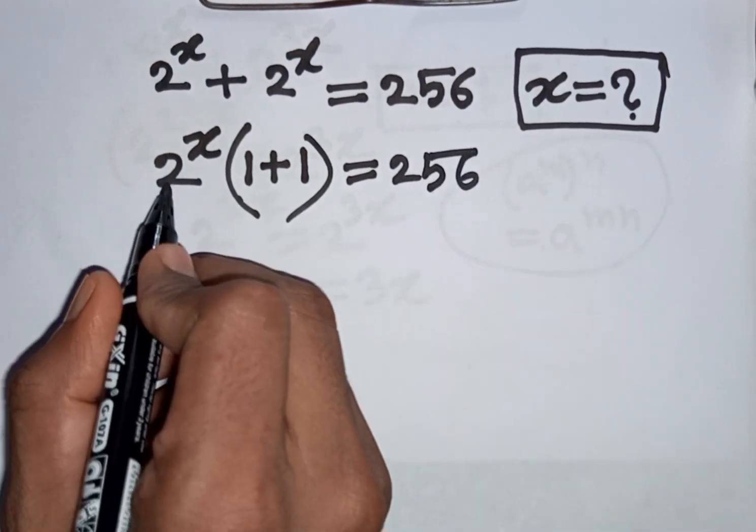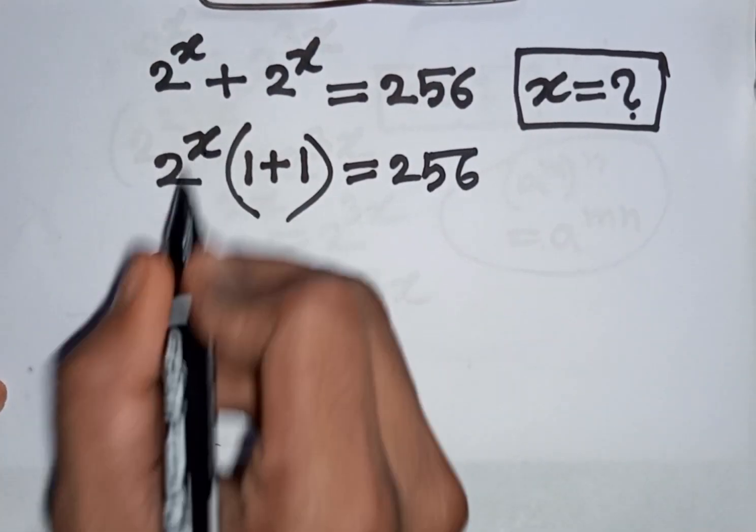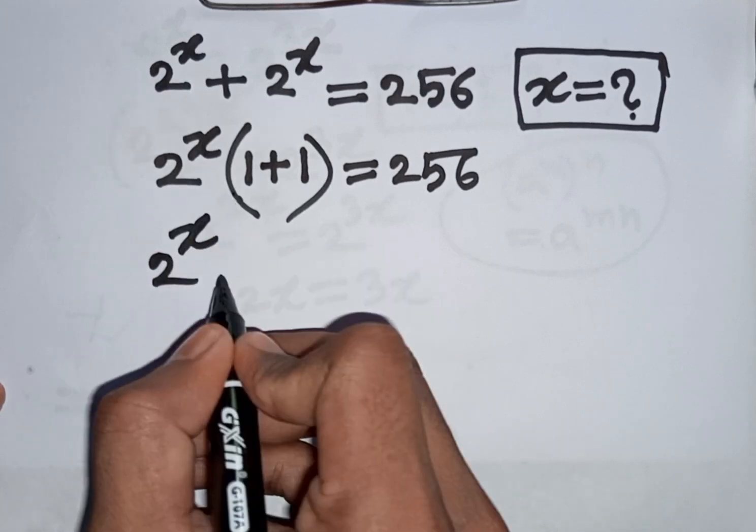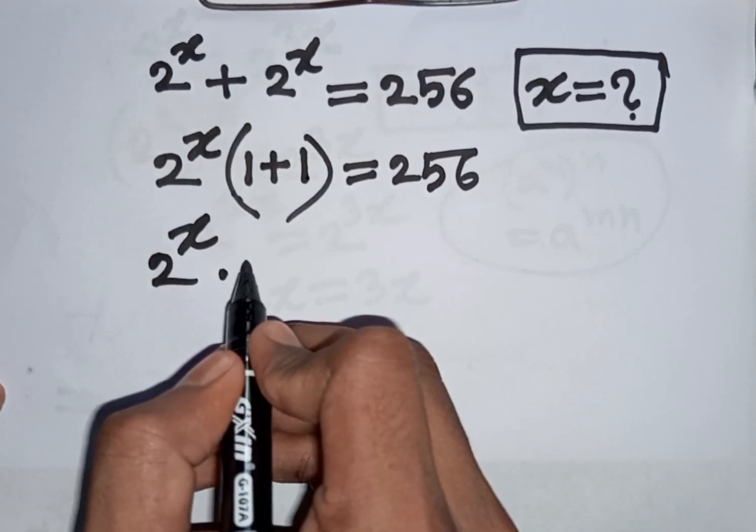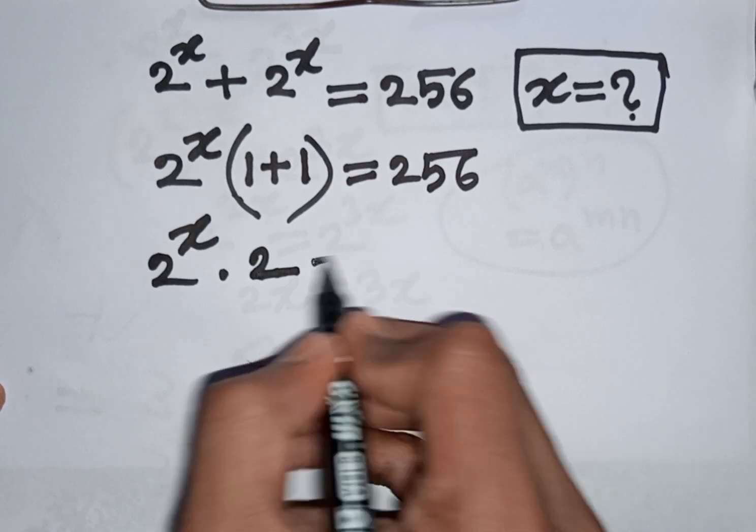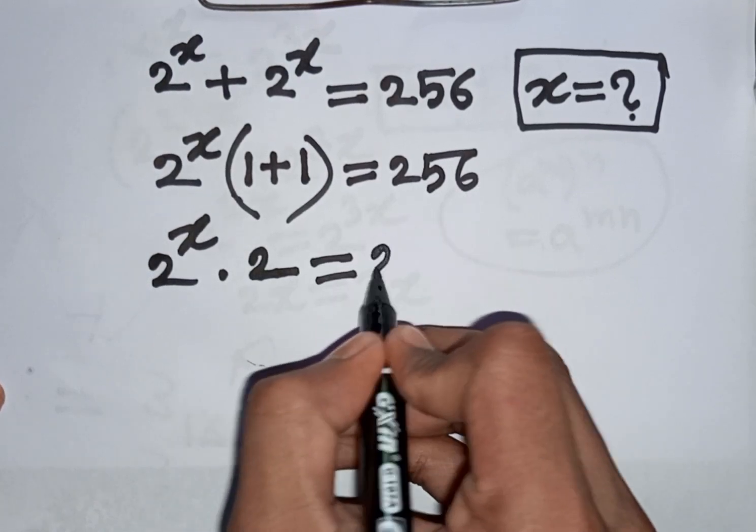Now we have 2 power x times 1 plus 1, that means it will be 2, then is equal to 256.